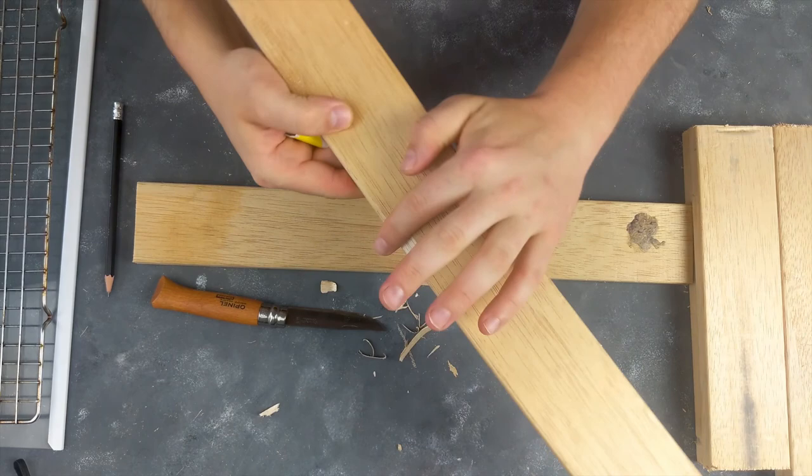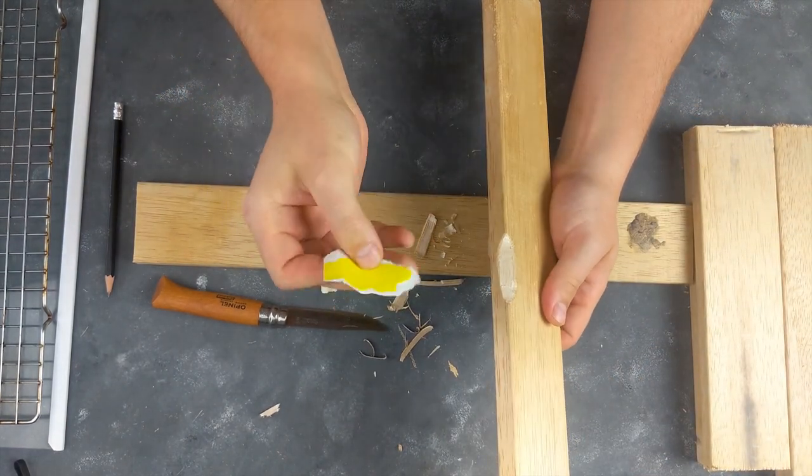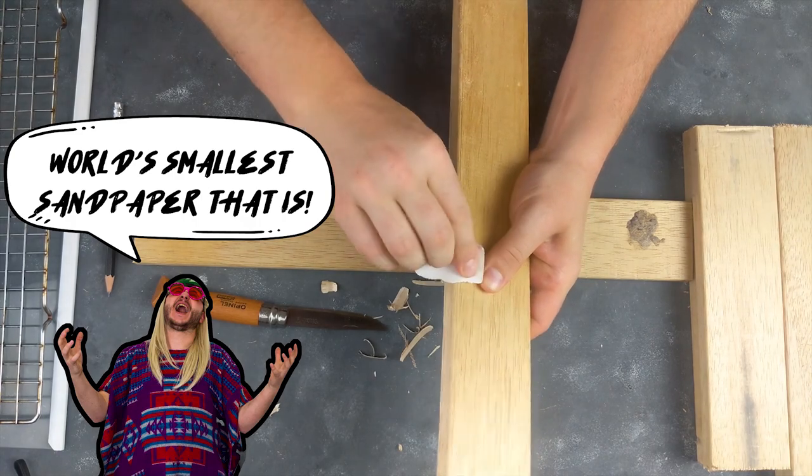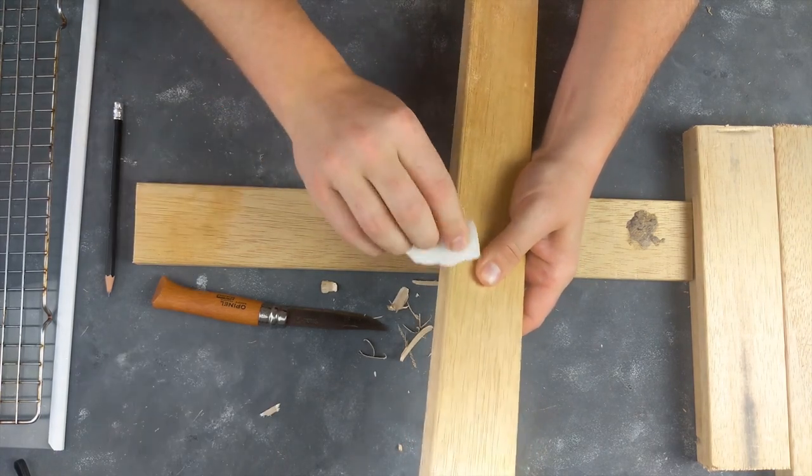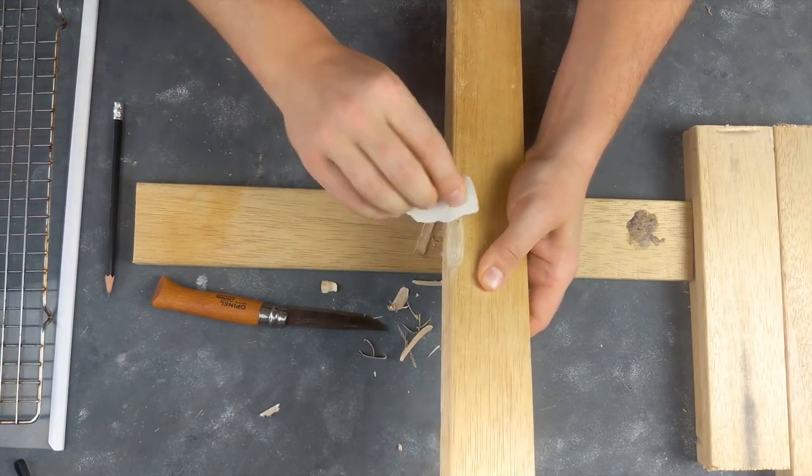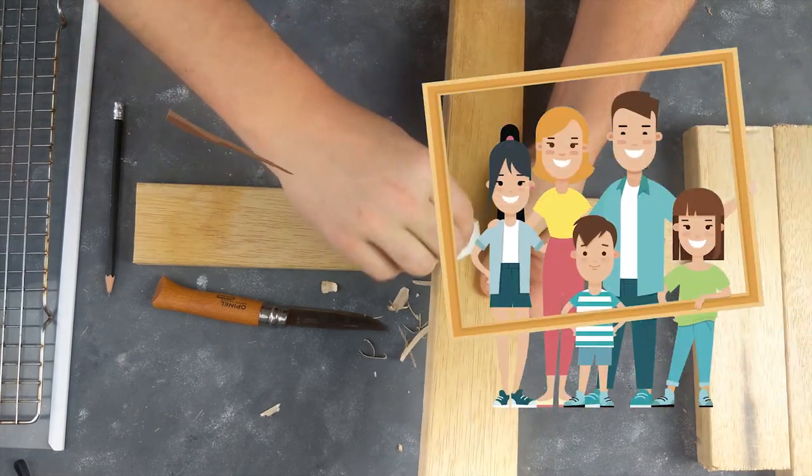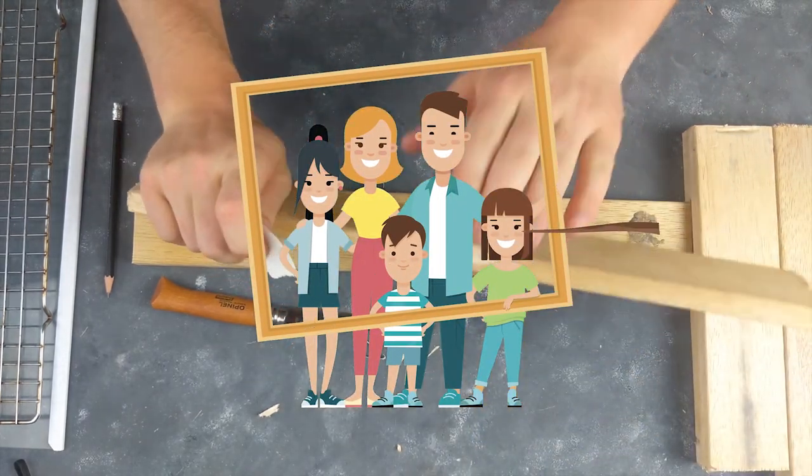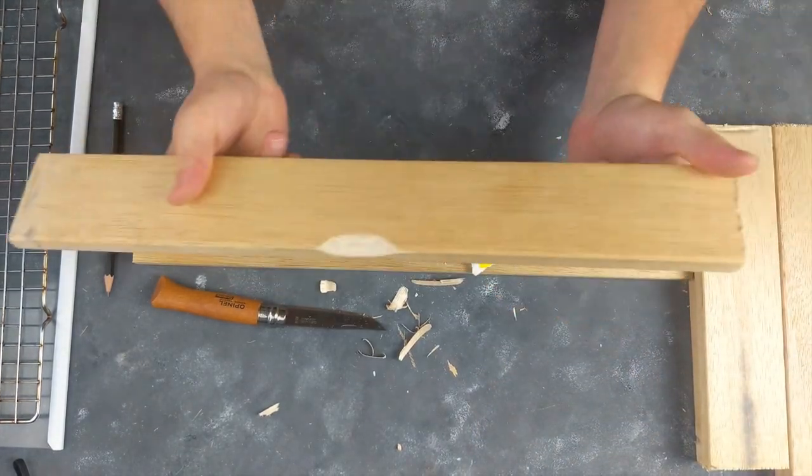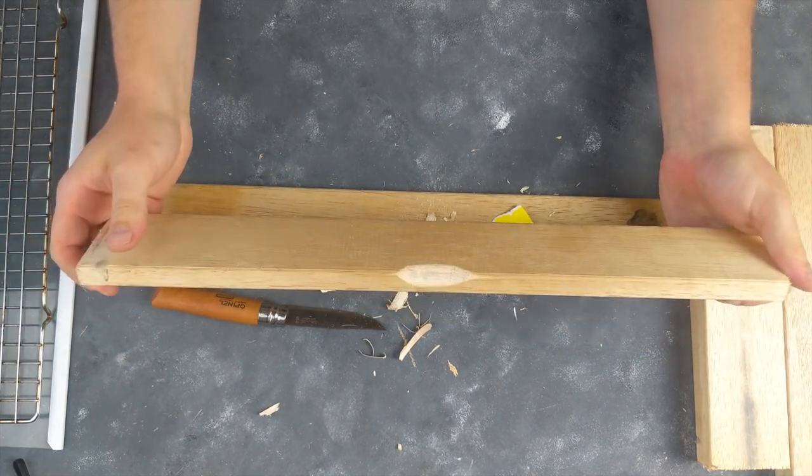Once you're happy with the notch, with the indentation that you made, just get some sandpaper and smooth out the edges. Just so you don't get any splinters in your fingers or your loved ones that are going to operate it. Now, all that's left is to put everything together and see the finished product. So let's get on it.